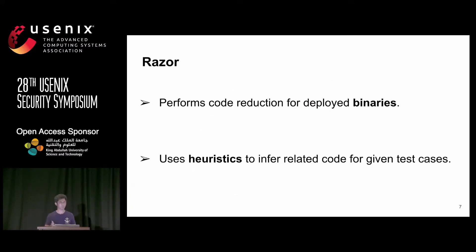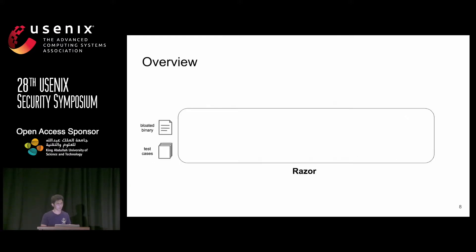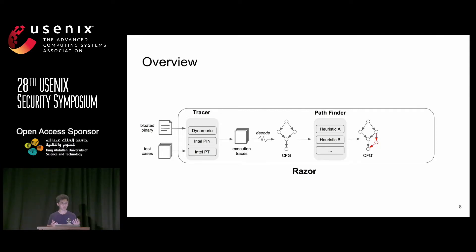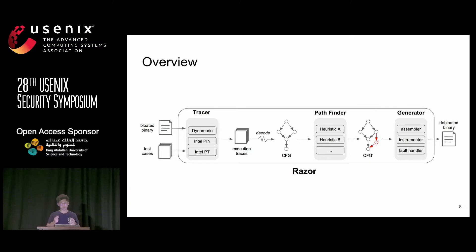To solve these two limitations, we proposed RAZOR, which performs code reduction for deployed binaries without source code. Instead of assuming test cases are complete, RAZOR uses heuristics to infer more related code for a given test case. Given a bloated binary and test cases, the tracer runs the binary, collects a trace, and decodes it to a CFG including all executed code. The pathfinder then uses heuristics to expand the CFG to infer code that is not executed but is highly likely to share the same functionality. Finally, the generator rewrites the binary to produce a debloated binary containing only executed and inferred code.